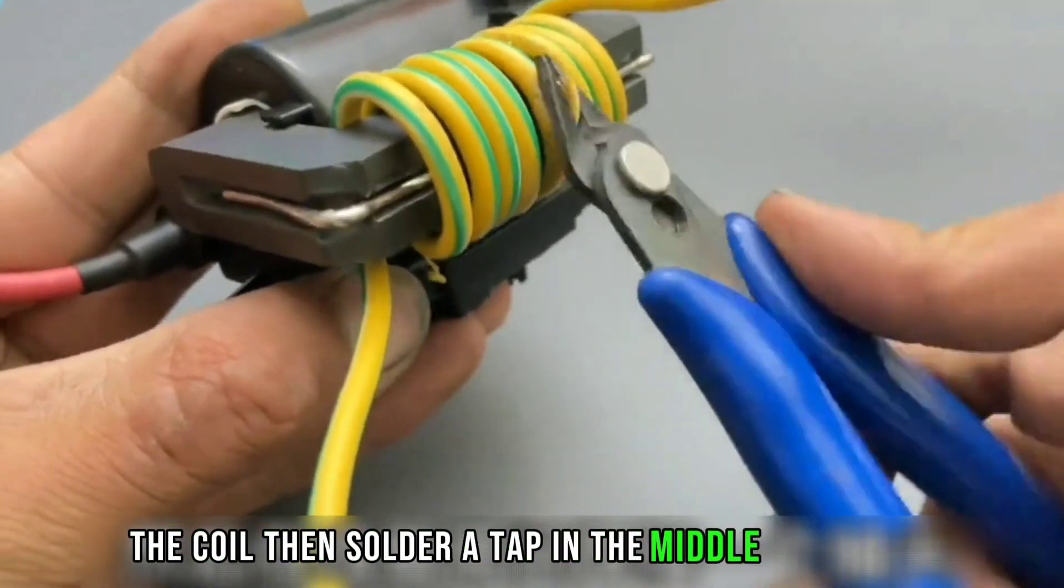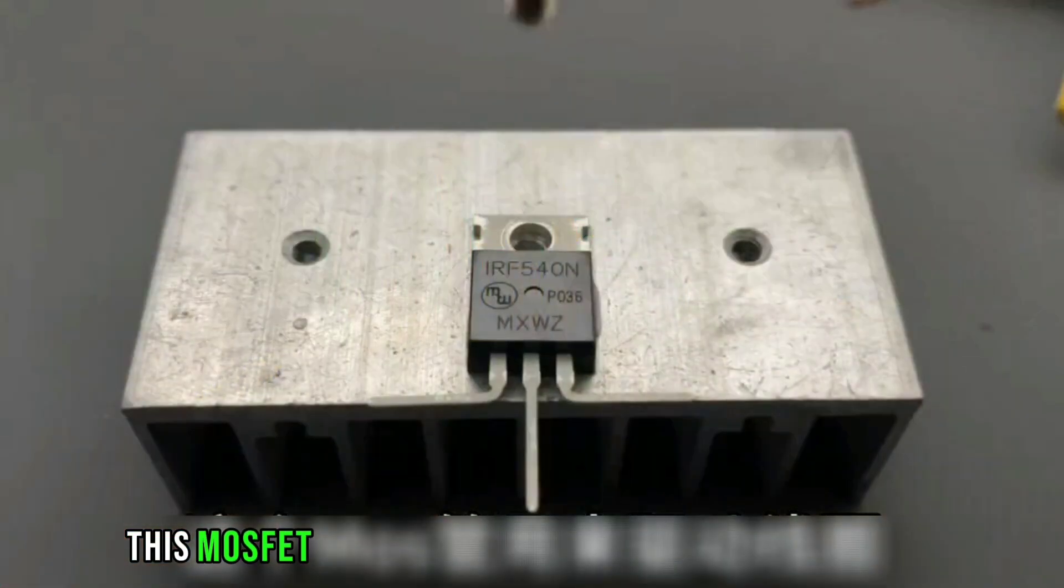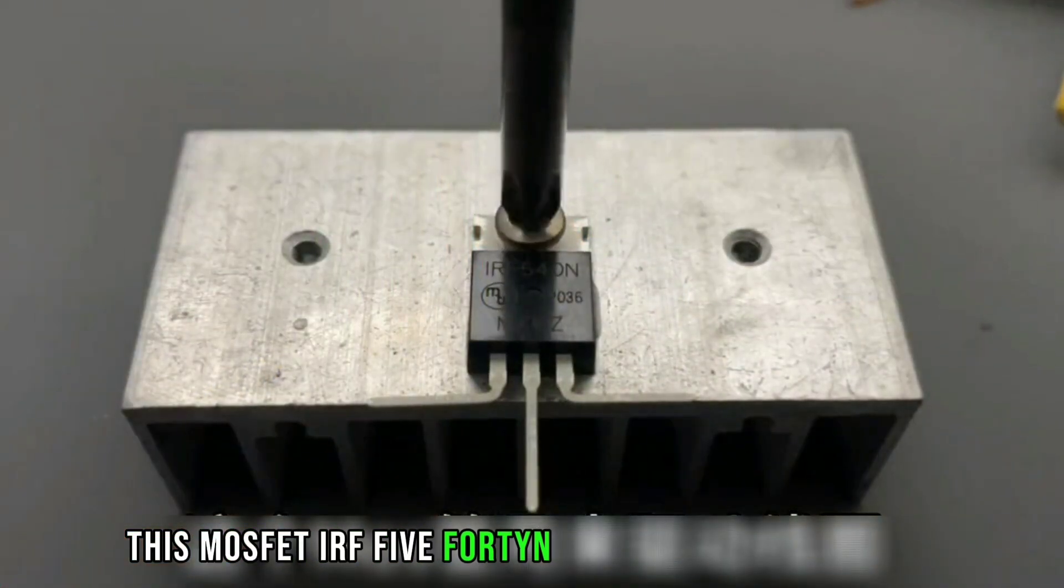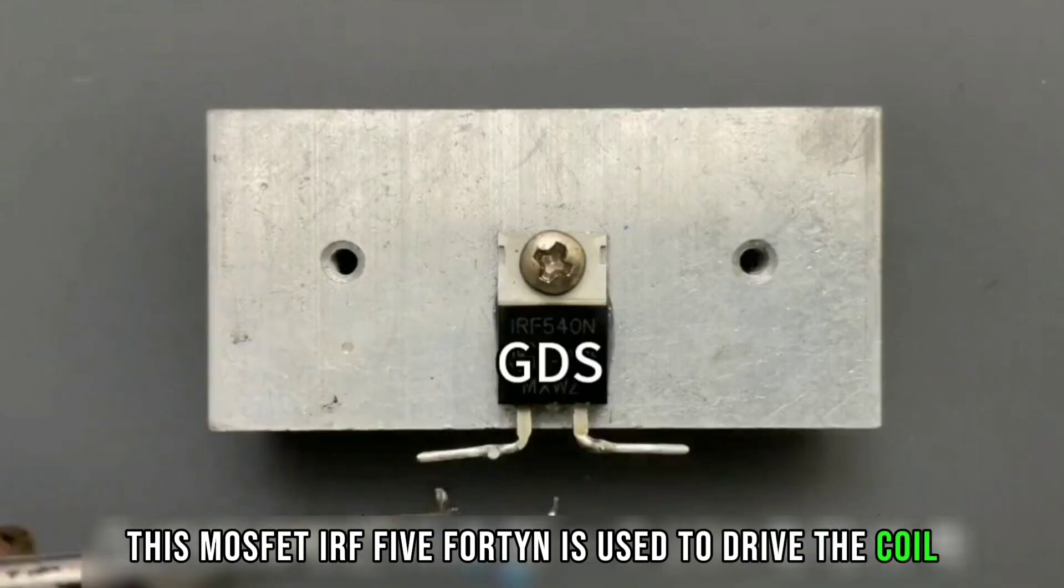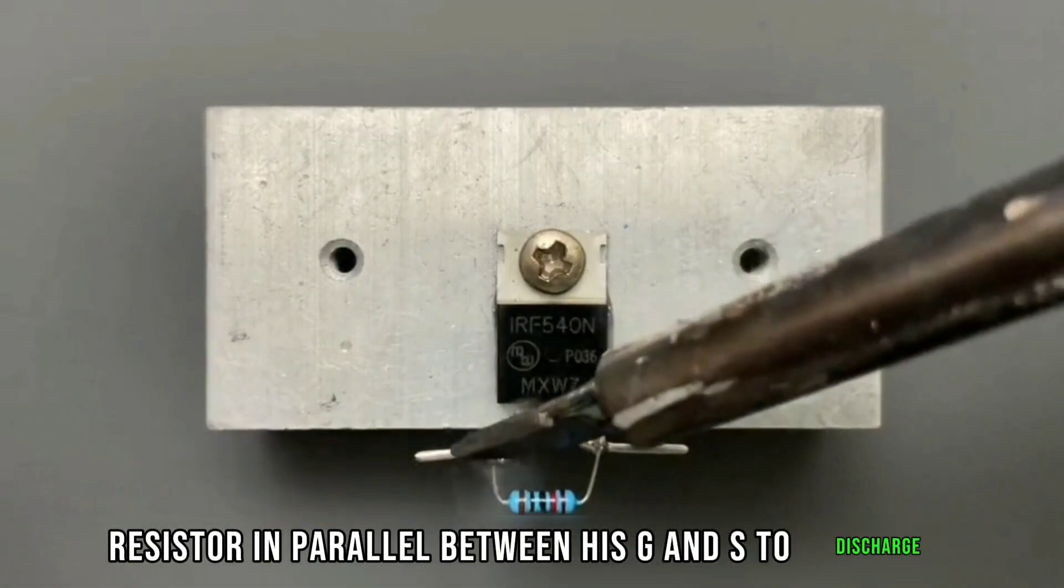Then solder a tap in the middle of the coil as the positive input terminal. This MOSFET IRF540N is used to drive the coil. Put a 10 kilo-ohm resistor in parallel between its G and S to discharge.